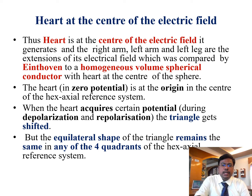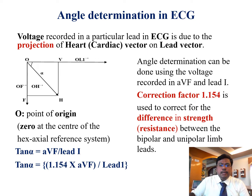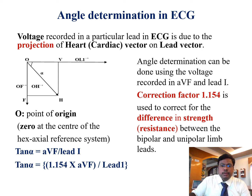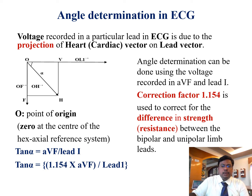Angle determination in ECG: voltage recorded in a particular lead is due to the projection of the heart vector on the lead vector. Angle determination can be done using the voltage recorded in AVF and lead one. AVF belongs to unipolar and lead one belongs to bipolar, so this has to be corrected. Therefore, tan alpha equals 1.154 times AVF divided by lead one — where 1.154 denotes the correction factor applied for the difference in resistance between the bipolar and unipolar limb leads.